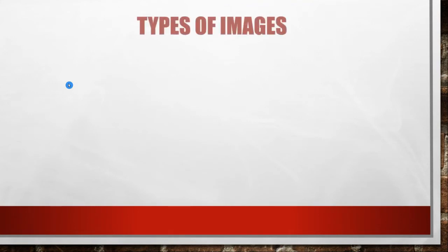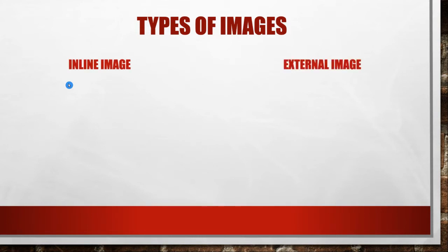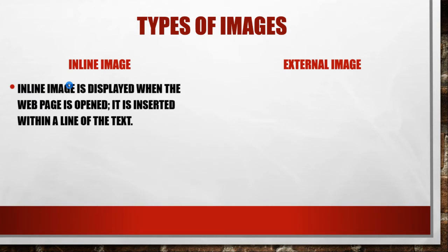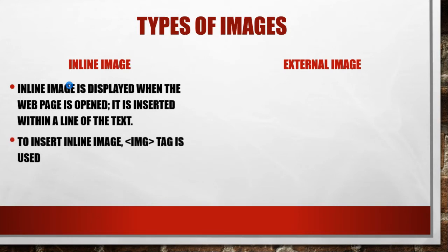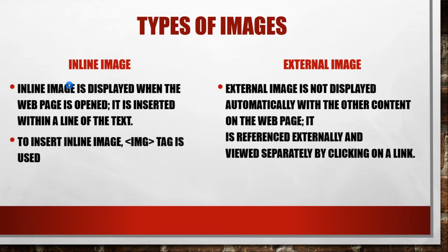There are two types of images: inline image and external image. An inline image is displayed automatically along with your website — when your website loads, the image also loads and is visible on the page. To insert inline images we use the img tag. An external image is not displayed on your screen directly; it only appears when you click on a particular link.